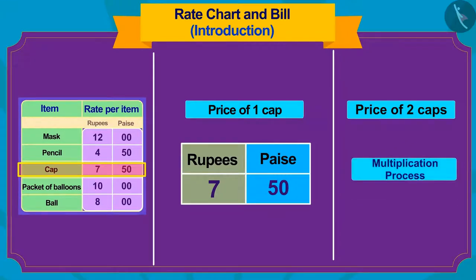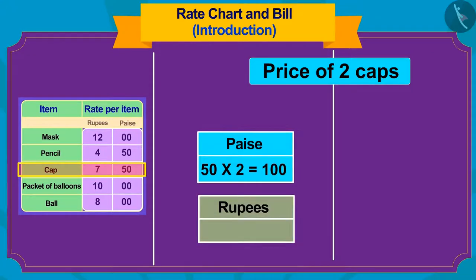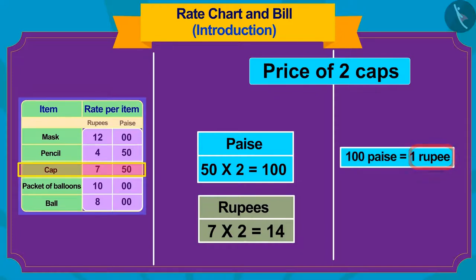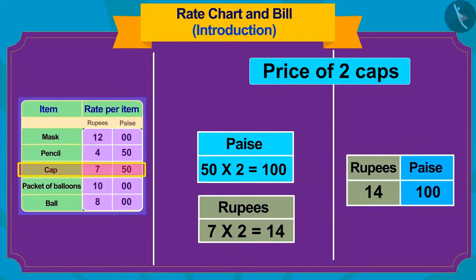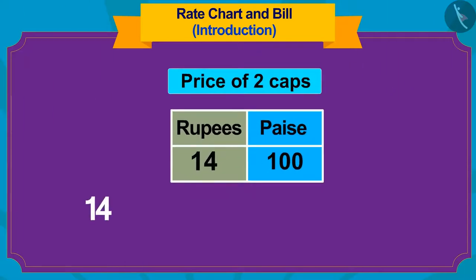Yes, we have to use the process of multiplication. First, we multiply the paise — multiply 50 by 2, which gives 100 paise. Now, we multiply the number 7 in rupees by 2, which makes 14 rupees. But how much rupees is 100 paise? Absolutely right — 1 rupee. If we add the rupees and paise, the value of two caps would be 14 plus 1, or 15 rupees 0 paise.